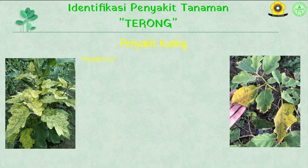Penyakit kuning keriting disebabkan oleh virus gemini. Virus ini ditularkan oleh kutu putih atau kutu kebul Bemisia tabaci. Serangan pada daun terjadi dengan cara virus memasuki lubang stomata dan menginfeksi. Virus dibawa oleh serangga vektor seperti kutu kebul.